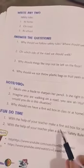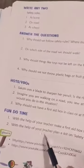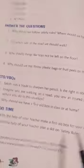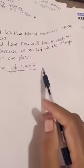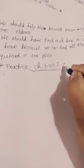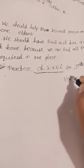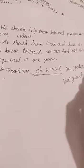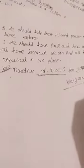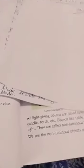With the help of your teacher, make a first aid box for your class, and plan a safety kit — this is your homework. Write all the question answers in your science copy and practice them. You should practice chapters 3 to 6 for your half-yearly exam. Thank you. Stay home, stay safe.